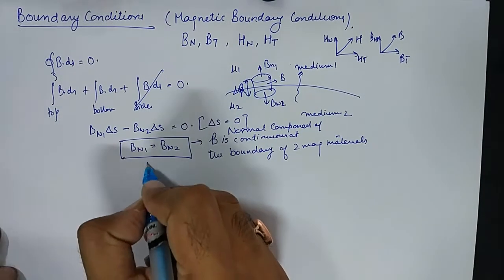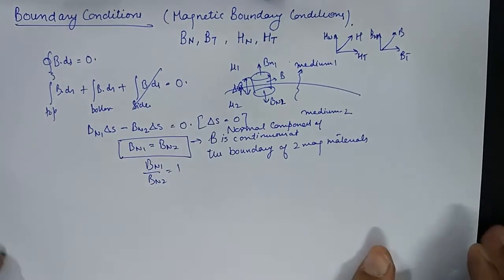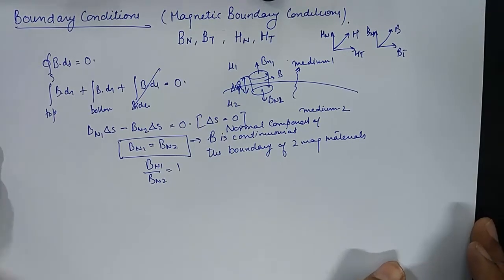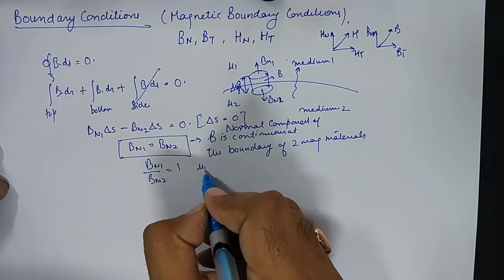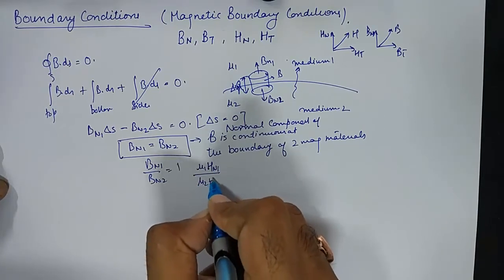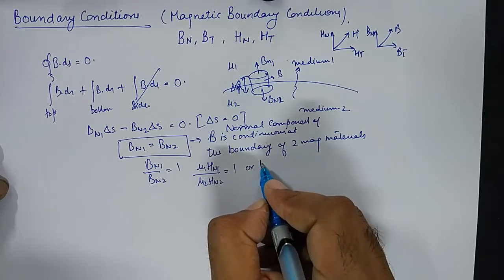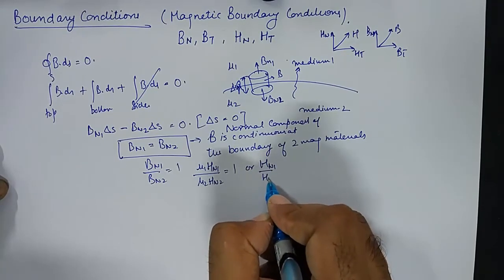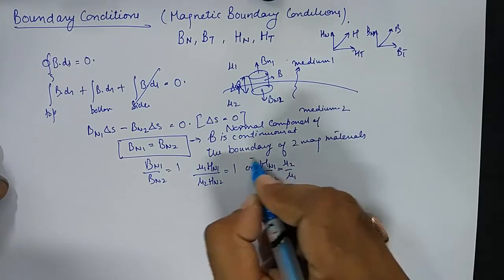So Bn1 is continuous at normal component of Bn2. So Bn1 upon Bn2 is 1. But is Hn1 upon Hn2 equal to 1? No, because B is equal to mu H. So mu1 Hn1 upon mu2 Hn2 will be equal to 1. However, Hn1 upon Hn2 will not be equal to 1. They will be mu2 upon mu1.